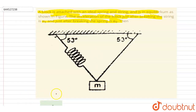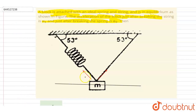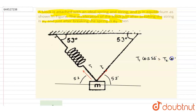The tension in the two strings will be the same by symmetry, because the horizontal components should be cancelling each other. If I draw a straight line, you can see that both strings are making angles of 53° and 53°. So if I write T1 and T2, it gives T1 cos53° equals T2 cos53°, so T1 equals T2.